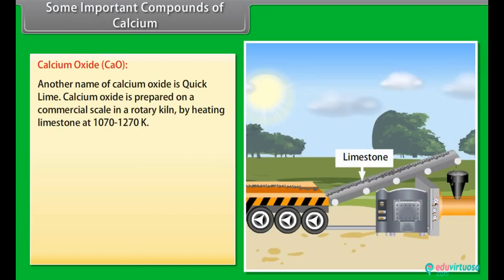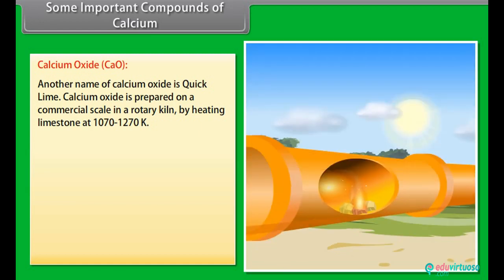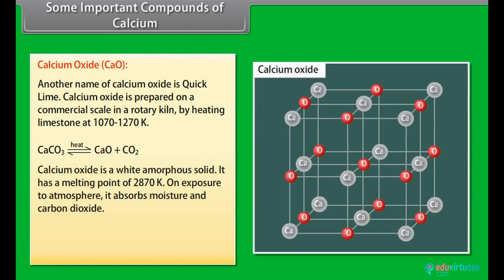Some important compounds of calcium: Calcium oxide. Another name of calcium oxide is quick lime. Calcium oxide is prepared on a commercial scale in a rotary kiln by heating limestone at 1070 to 1270 kelvin. Calcium oxide is a white amorphous solid. It has a melting point of 2870 kelvin. On exposure to atmosphere, it absorbs moisture and carbon dioxide.